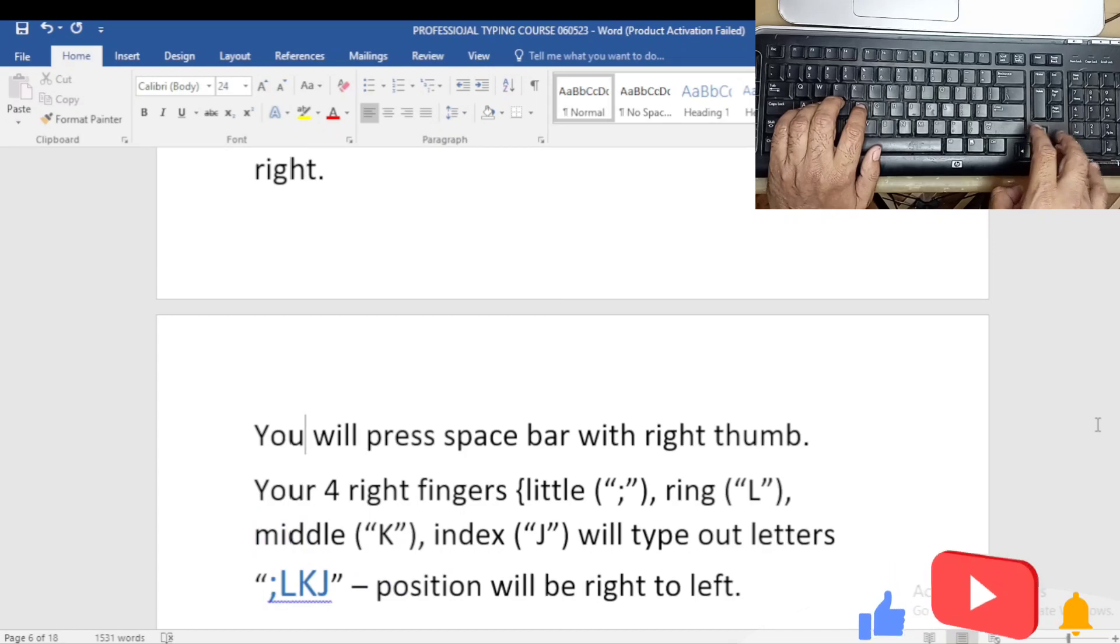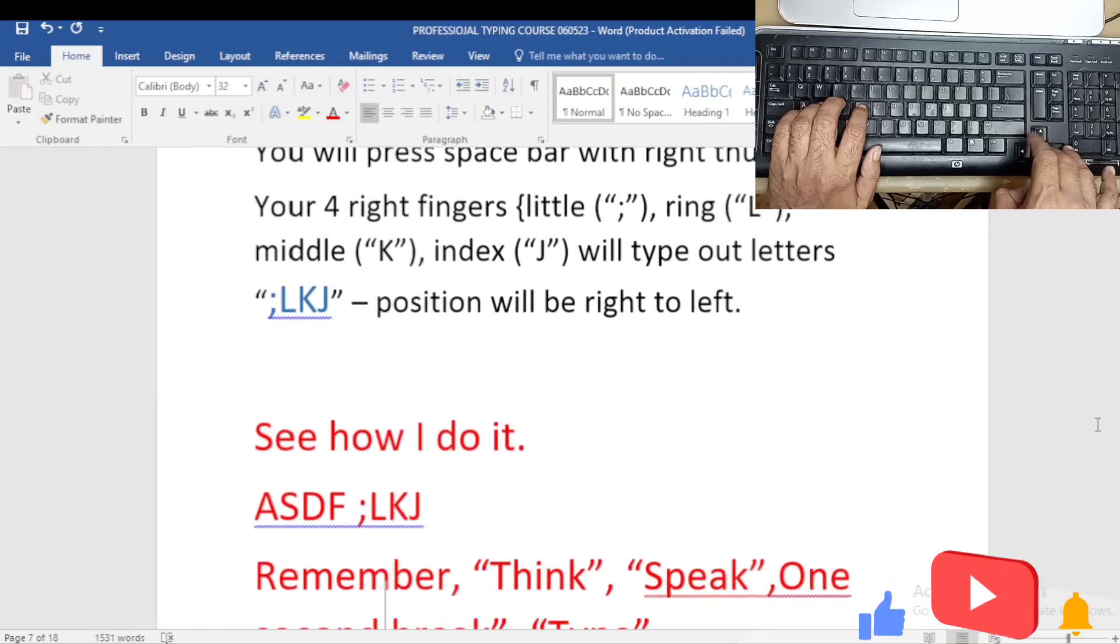You will press space bar with right thumb. Your four right fingers—little, ring, middle, index—will type out letters semicolon, L, K, J. Position will be right to left.